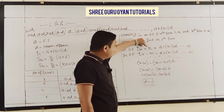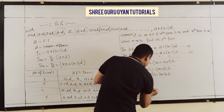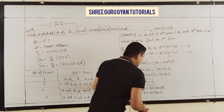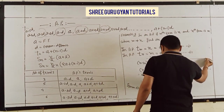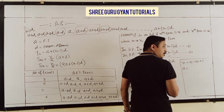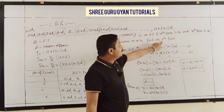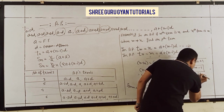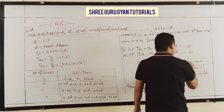Substituting D = -1 into equation 1: N = A + (M-1)(-1) = A - M + 1. So A = N + M - 1. Now for the Pth term: T(P) = A + (P-1)D = (N + M - 1) + (P-1)(-1) = N + M - 1 - P + 1.